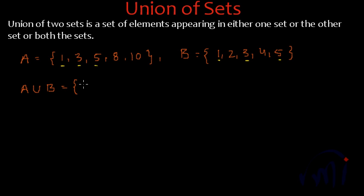So first step in writing the elements of union is write down all the elements of the first set. So all the elements of first set are 1, 3, 5, 8, 10, and then write all the elements of set B which are not there in set A. So the elements of set B which are not there in set A are only 2 and 4. So the set A union B have all the elements of set A and it also has all the elements of set B.